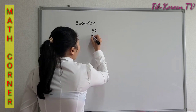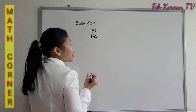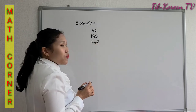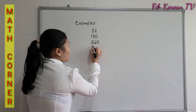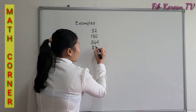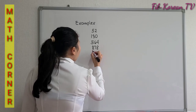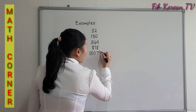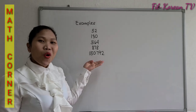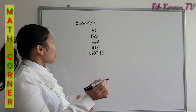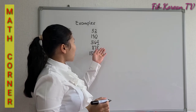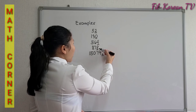Examples: 52, 130, 564, or 878 — even a large number. These numbers are all even numbers because the last digits are 2, 0, 4, 8, and 2.